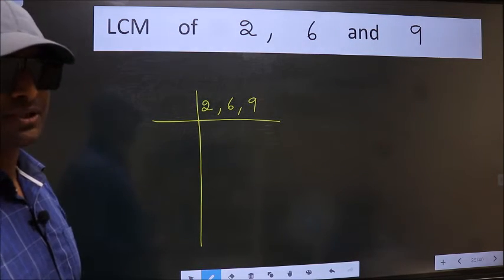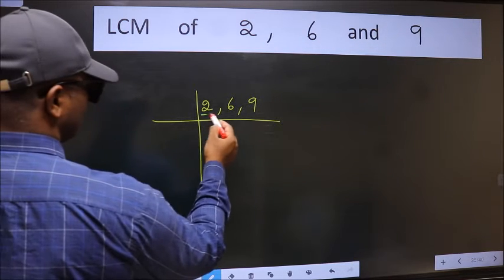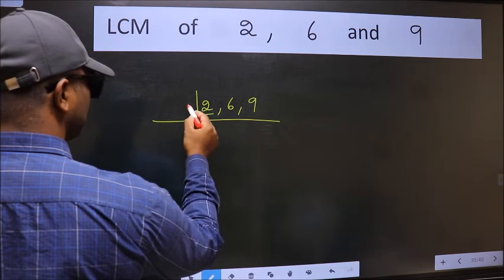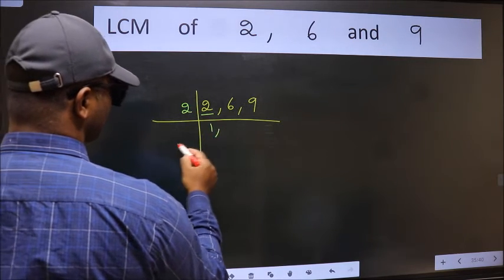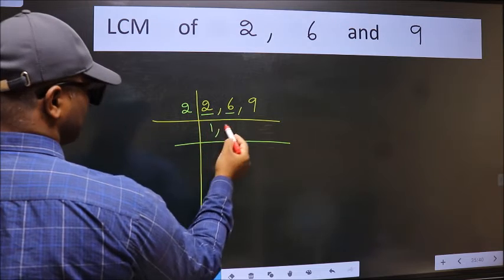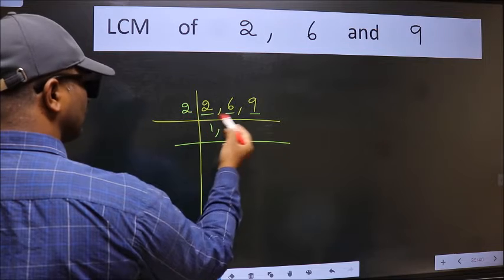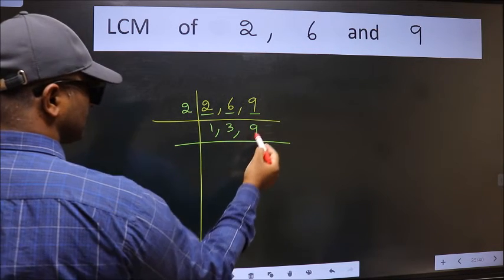Now we should focus on the first number which is 2 here. 2 is a prime number, so 2 divides 2. The other number 6, when do we get 6 in 2 table? 2 times 3 is 6. The other number 9, not divisible by 2, so we write it down as it is.